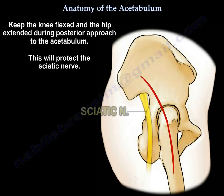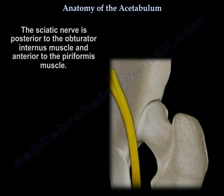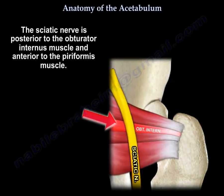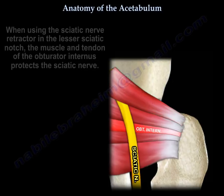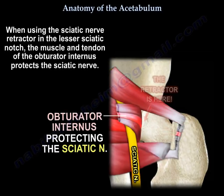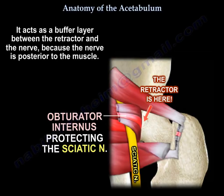Keep the knee flexed and the hip extended during the posterior approach to the acetabulum — that will protect the sciatic nerve. The sciatic nerve is posterior to the obturator internus and anterior to the piriformis. When using the sciatic nerve retractor in the lesser sciatic notch, the muscle and tendon of the obturator internus protect the nerve, acting as a buffer layer between the retractor and the nerve.